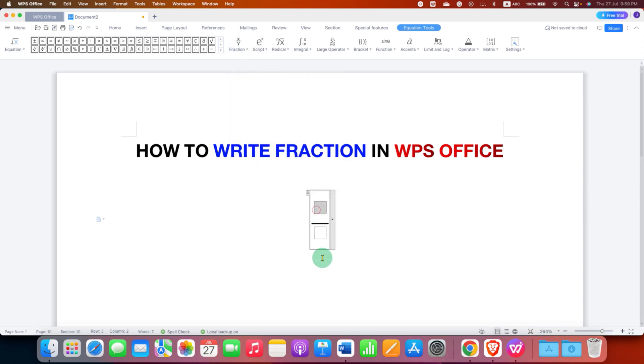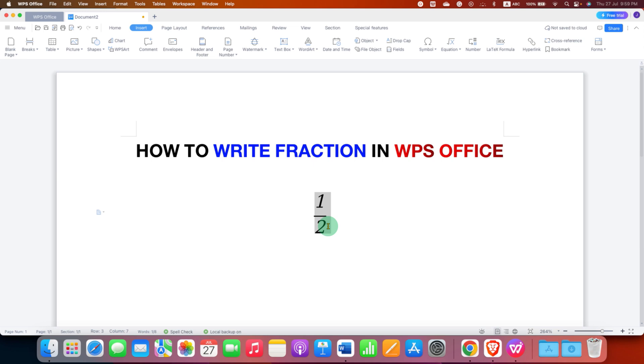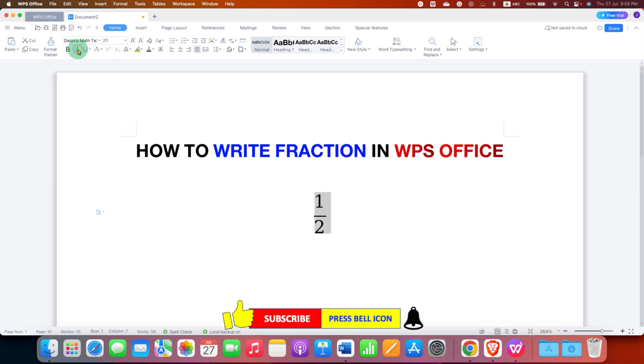In the boxes, just type the numbers. By default, this will be in italics, so you need to select everything, then go to the Home tab and click on this I button to remove the italics.